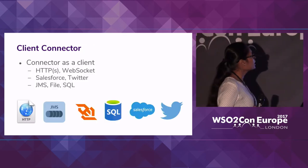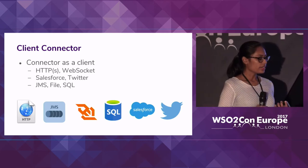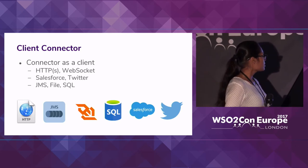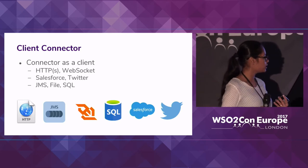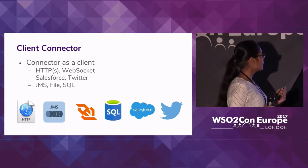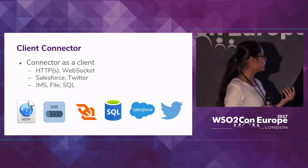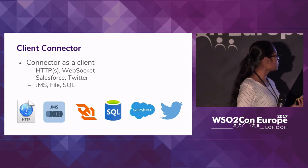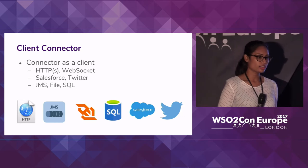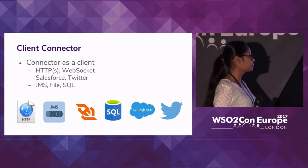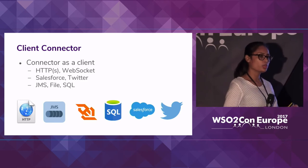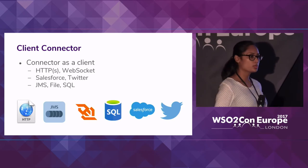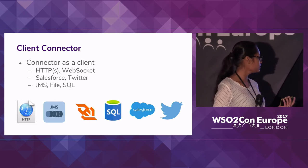Client connectors are the other type of connector in Ballerina — they interact with external systems. We have a bunch of built-in client connectors: HTTP, HTTPS, and WebSocket as network connectors, and API connectors like Salesforce and Twitter. There are also data integration connectors like JMS, file and SQL that you can import to your Ballerina runtime and use in your invocations. Apart from this, you also have the option of writing your own client connectors for your integrations.